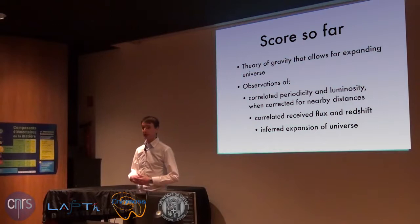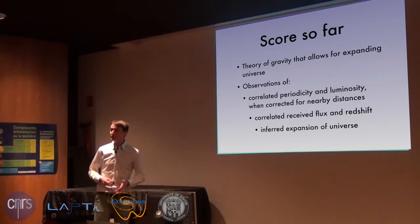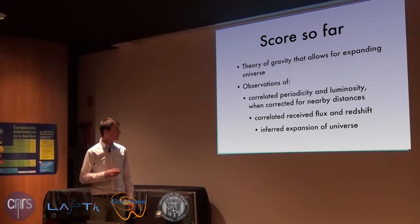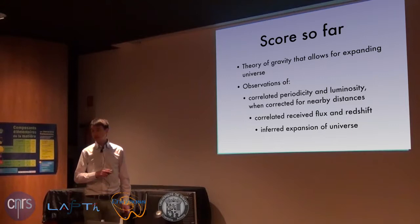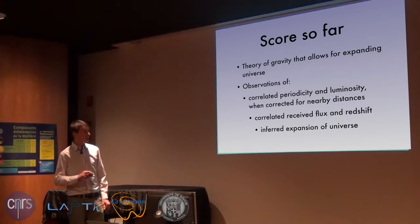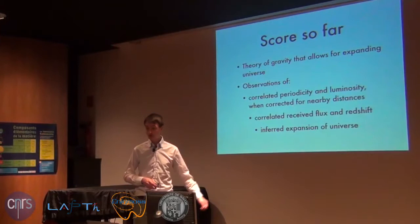In the second half, I will continue the same line of reasoning as in the first half, step by step getting to the conclusion of how the Big Bang model looks and what are the ingredients of the universe. Let me repeat what I said before the break: the theory of gravity allows for an expanding universe. We observe a correlated periodicity and luminosity in Cepheids when correcting for nearby distances — these are very special stars. Then we correlate the received flux and the redshift of spectra of very distant stars, and from that we infer expansion because redshift is clearly correlated with the distance to the object.